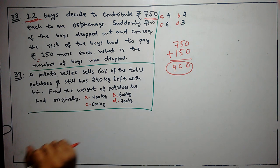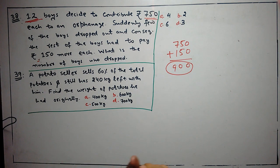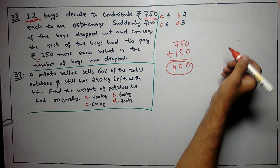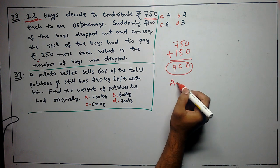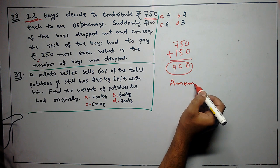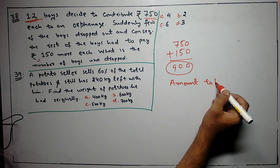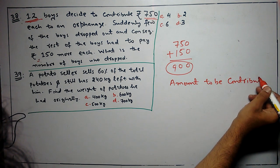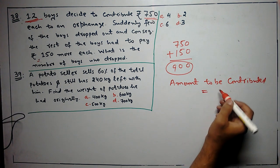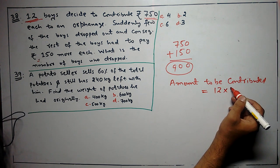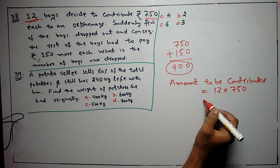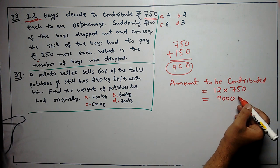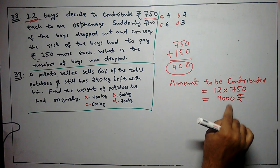First of all, we will know what was the contribution before, for 12 boys. We will write the amount to be contributed. It was 12 boys and everyone gave 750. That means we will get 9,000 total contribution.